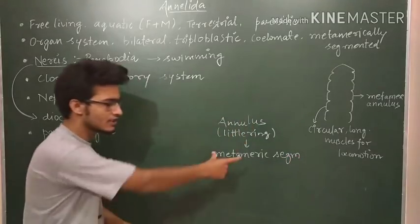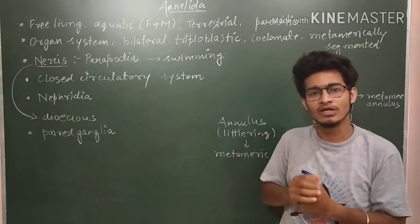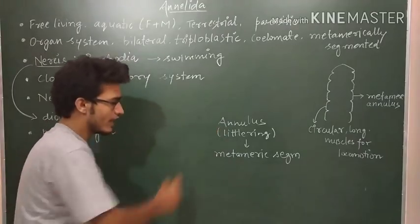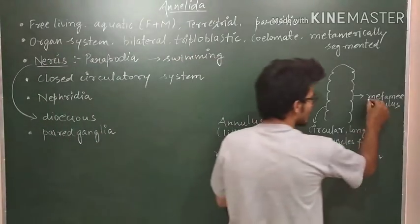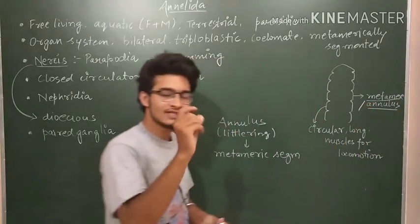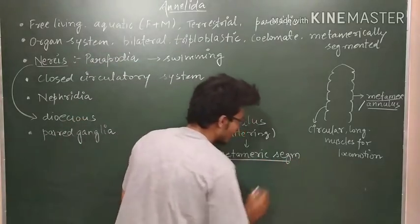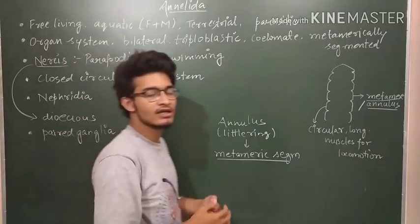We have already talked about this phenomenon in the initial lectures or the introductory lectures of Animal Kingdom. Annulus means little ring which are known as the metameres. These are the little rings. And the metameric segmentation is the phenomenon which is shown by the Annelida.